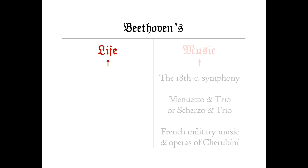Lastly, in wrapping up Unit 1, we will examine how ideas about music's purpose were changing during Beethoven's lifetime, and how those changes contributed to a tension between his goals of achieving widespread fame and maintaining his standards of artistry.